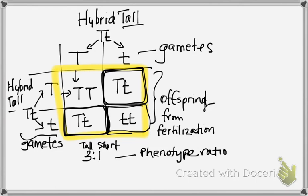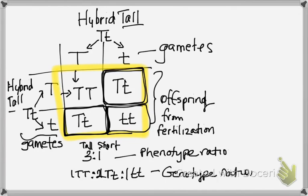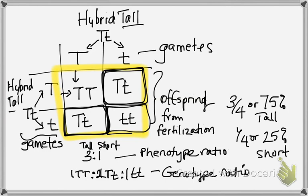But we know our genotype ratio is going to be one homozygous dominant, one, I'm sorry, two heterozygous, and one homozygous recessive. That's the genotype ratio. You can also use fractions or percentages. You could say three fourths or 75% tall and one fourth or 25% short. So, there's other ways to report it.